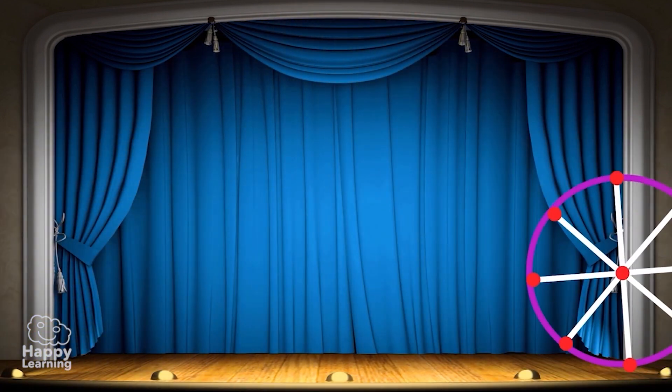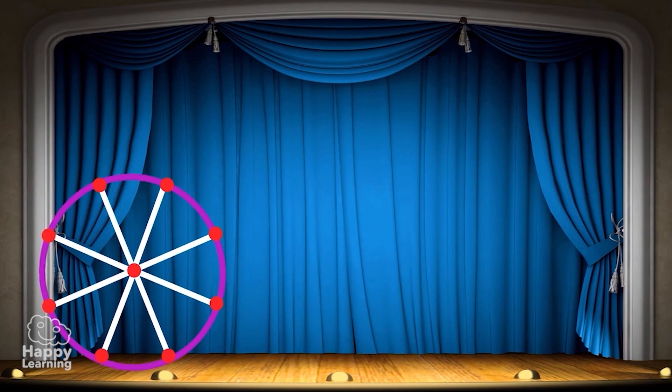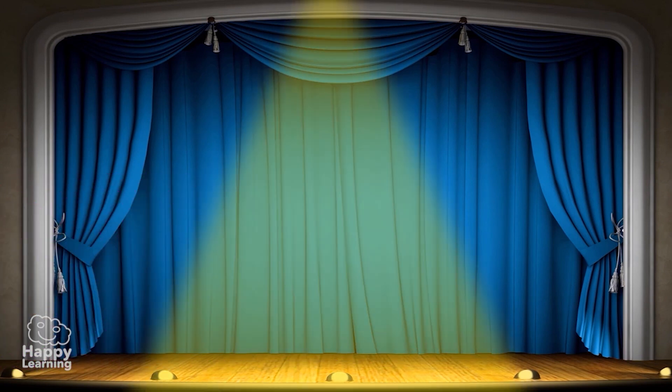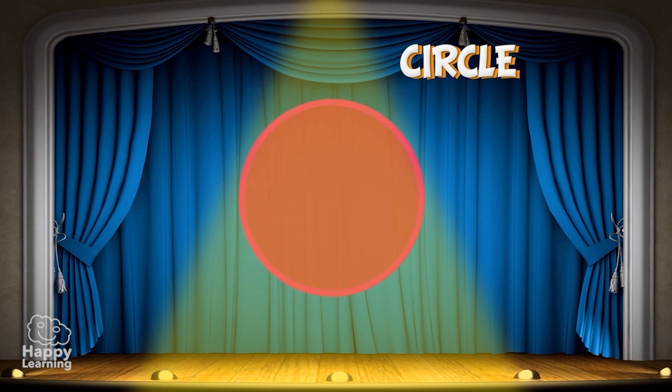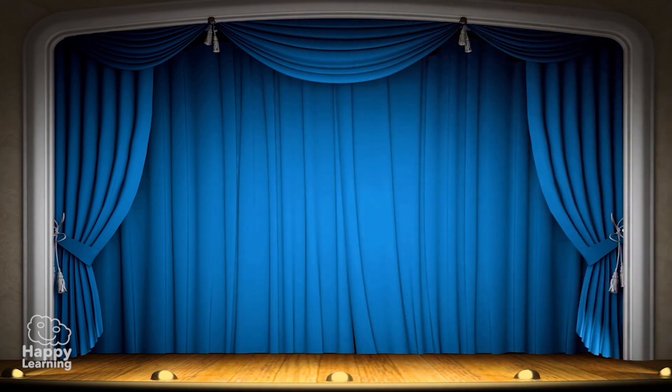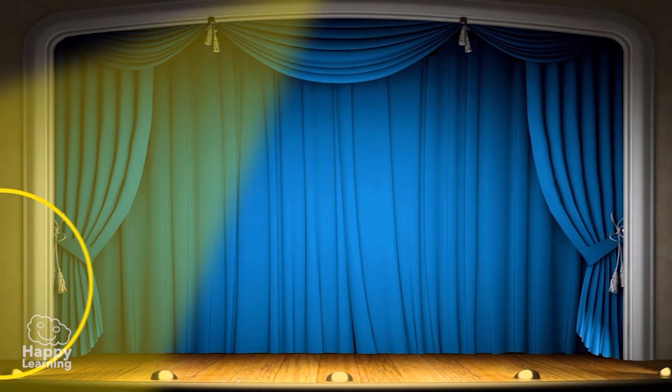Well, now we know what a circumference is. It is really easy to understand what a circle is, as a circle is a circumference and its interior. Simple, isn't it?